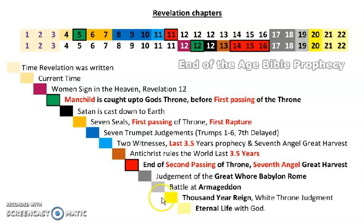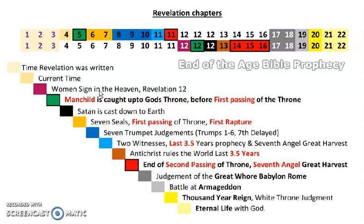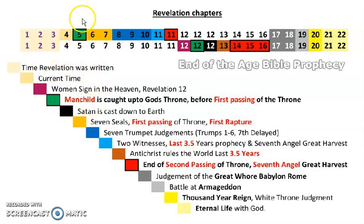Hi guys, I just want to show you Revelation — the chapters and the sequence. There are actually two sequences of timeline events that go from literally the beginning of the tribulation events to the end. I think this is why I've had trouble presenting it, trying to keep it in order of chapters but also trying to put it in some sort of chronological order, and it's near impossible. So let's just have a look.